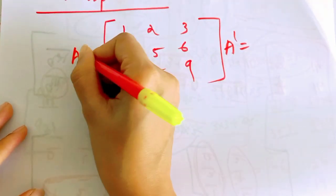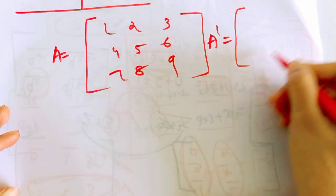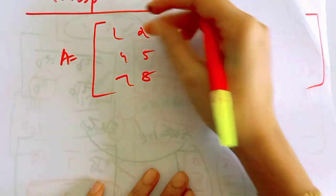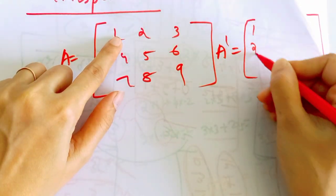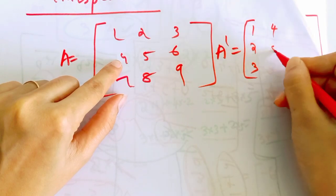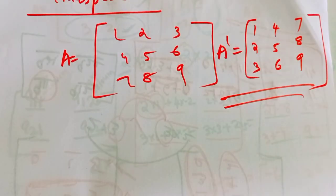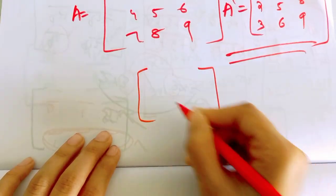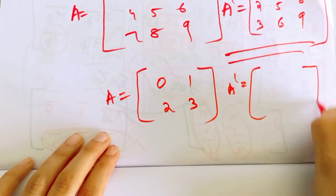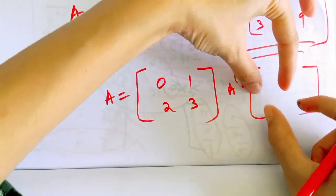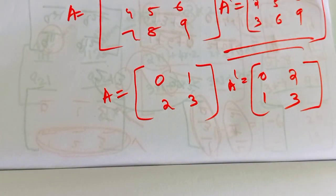We can explain the transpose. Transpose is when rows become columns and columns become rows. For example, taking the matrix 0, 1, 2, 3 — what is its transpose? The transpose rearranges the elements accordingly.